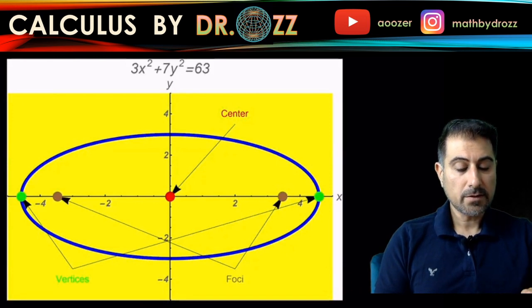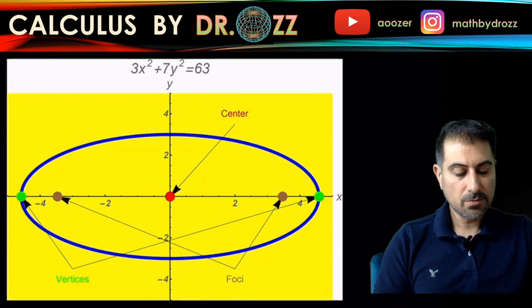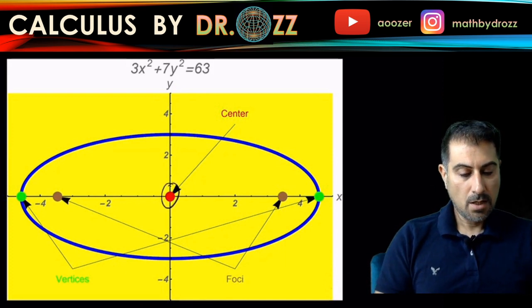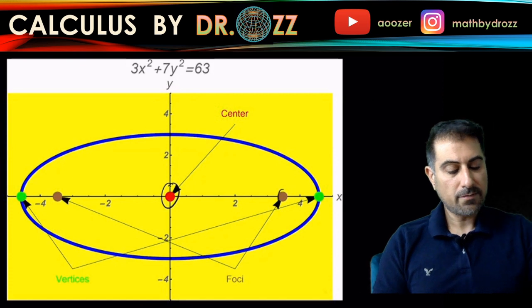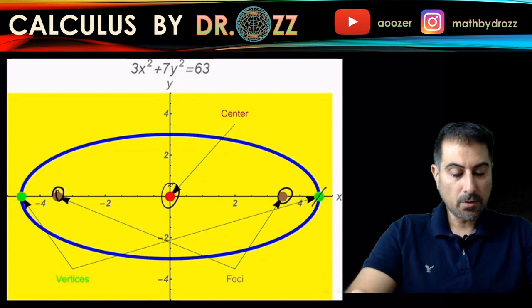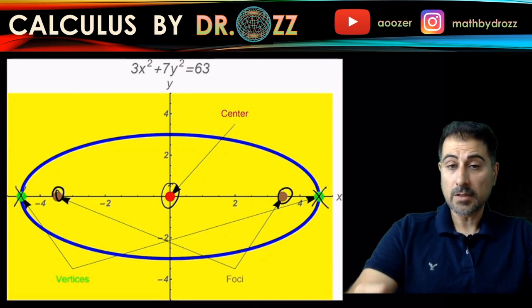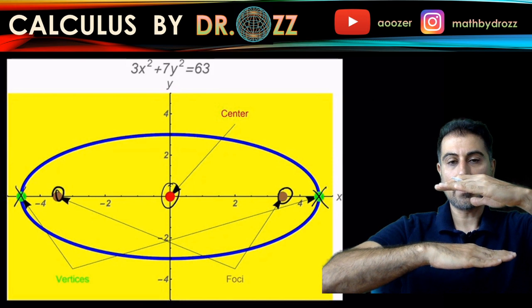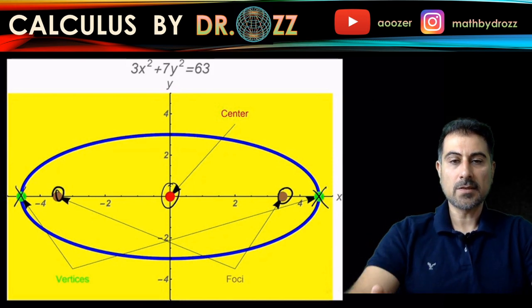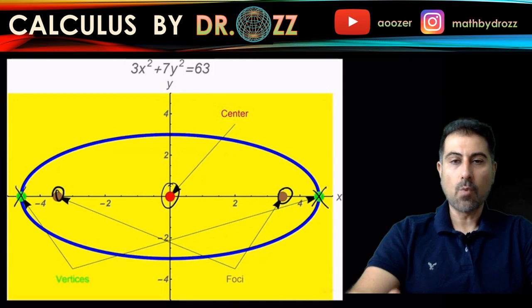So you have the center here, we have the center right here at the origin. We have two foci here, and we have the vertices right here. We got the coordinates of all of them down. And as you see that the major axis is horizontal and the ellipse is a little bit flat because the eccentricity is closer to one.